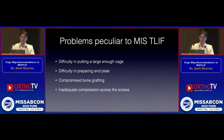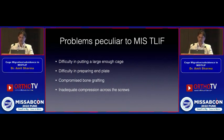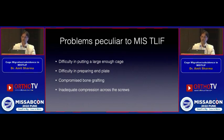There are peculiar problems with MIS TLIF compared to open surgery: difficulty inserting larger cages, especially through a tube rather than an expandable retractor. Inserting a size 16 cage when the disc space is high can be very challenging, and there's always risk of hitting the exiting nerve root. Endplate preparation is somewhat compromised without ideal instruments. Bone grafting is also slightly compromised unless bone graft extenders are used — insufficient graft can lead to late-onset cage back-out. Inadequate compression across the screw is also a definite risk factor in MIS TLIF.